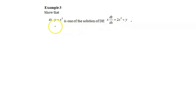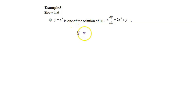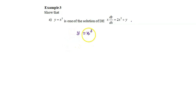In order to show the given equation as one of the solutions for the DE, we start by writing y equals x cubed. Next, we differentiate this equation with respect to x, which gives us dy over dx equals 3x squared.